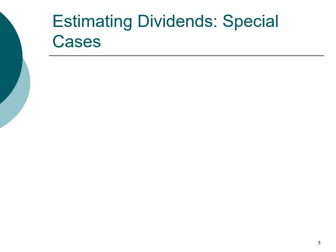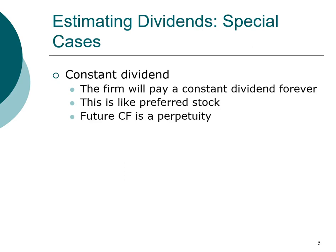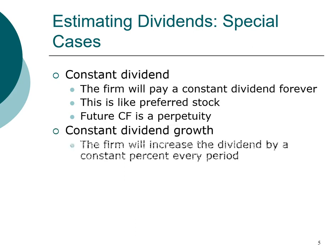Let's take a look at a few special cases that allow us to estimate the cash flow associated with a stock so that we can compute the value of the stock. The first special case is a constant dividend company — a constant dividend means the company will pay the same dollar amount forever. A good example is a preferred stock: if a company pays a 4% preferred stock, it pays four dollars in dividend every single year forever. Since the dollar amount is the same and it lasts forever, the cash flow is a perpetuity, and we already know how to value a perpetuity.